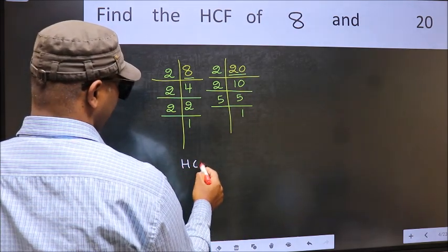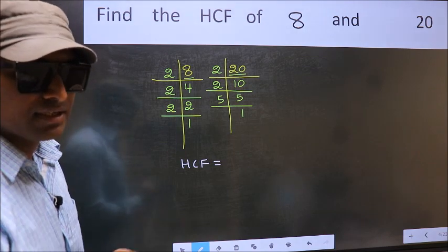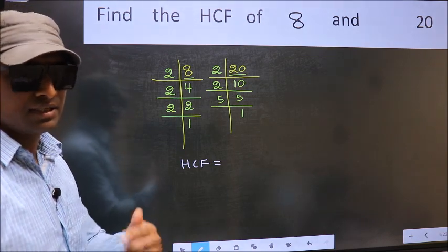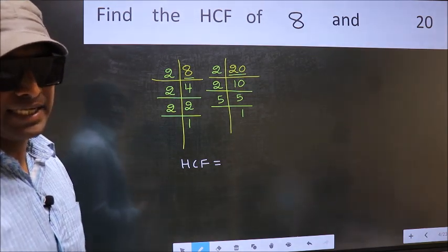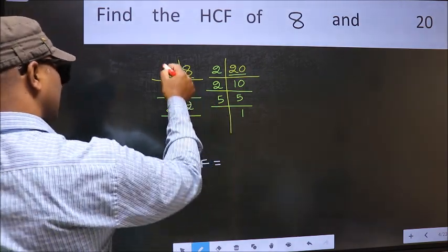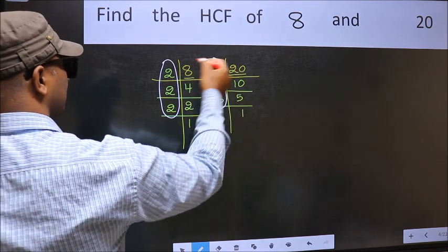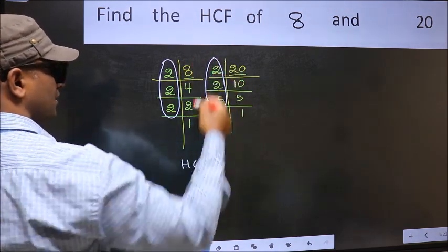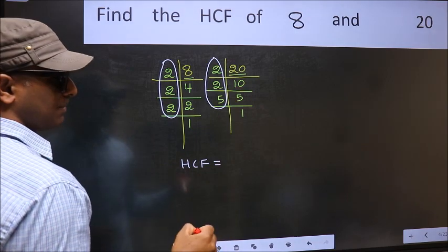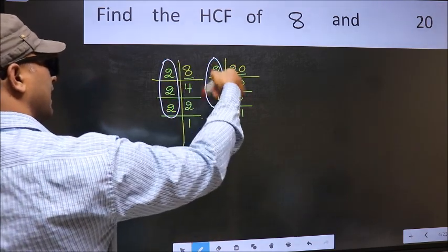Therefore our HCF is the product of the numbers which should be present in these 2 places. That is here and also here. So, now let us find the numbers which should be present here and here.